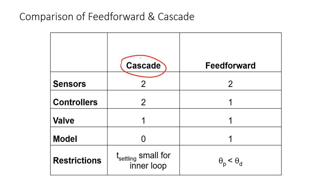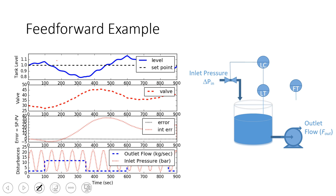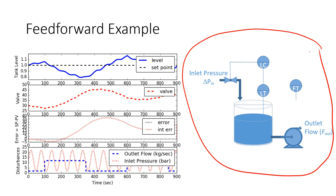Summary comparing feedforward and cascade: cascade uses two sensors, two controllers, one valve, and no model — but requires the inner loop settling time to be small. Feedforward is similar but uses only one controller and requires a disturbance model, with the restriction on dead time mentioned earlier. The recommendation is to use cascade when possible, and use feedforward when there is no inner loop or the same final control element cannot control the disturbance. A feedforward example with a tank problem is available on the course website.